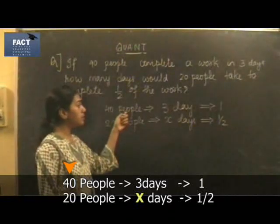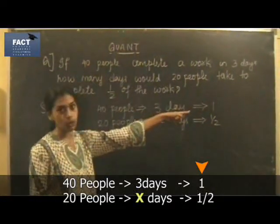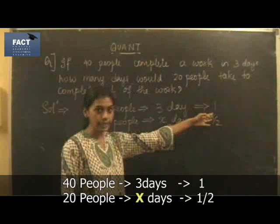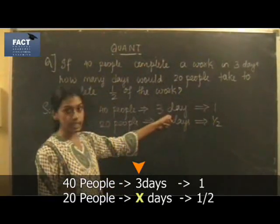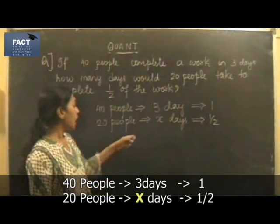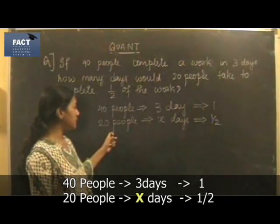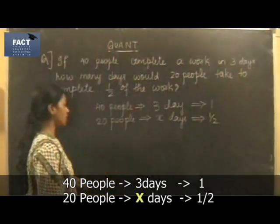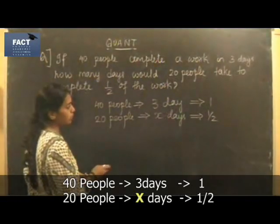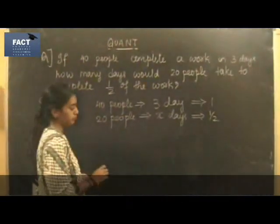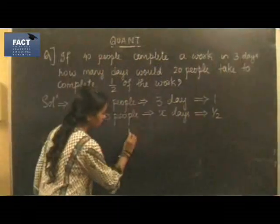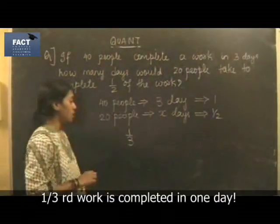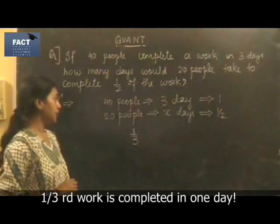So as per our rules, the first thing that we gotta do is to find the unit work. From the question, we see that 1 by 3 of the work would be done in one day.